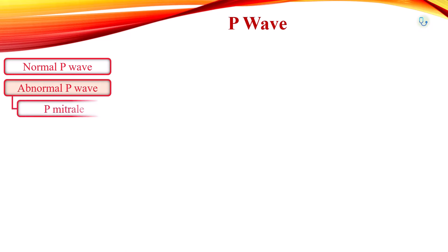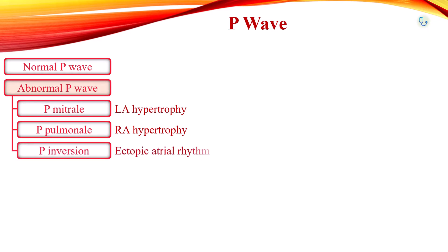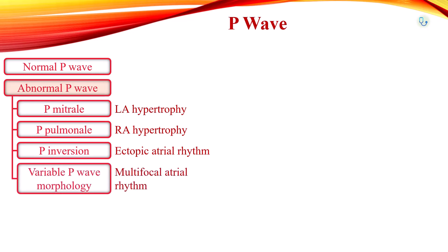Common P wave abnormalities are as follows: P mitrale, also called bifid or notched P waves, seen with left atrial hypertrophy; P pulmonale, also called peaked P waves, seen with right atrial hypertrophy; P wave inversion, seen with ectopic atrial and junctional rhythms; and variable P wave morphology, seen in multifocal atrial tachyarrhythmia.